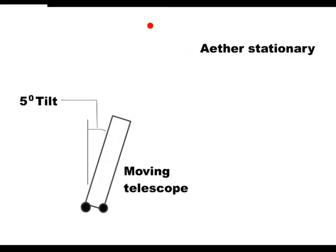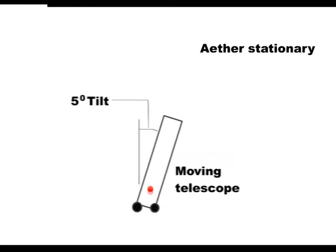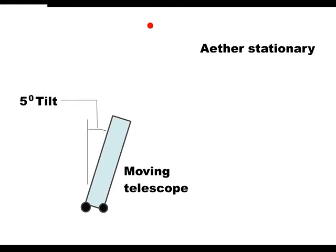However, there is a simple experiment that can determine whether it was the Earth that was moving or the ether and starlight. All that you had to do was record the tipping required for any particular star, then fill the telescope with water, which greatly slows down the speed of light in the telescope.